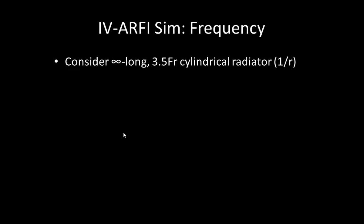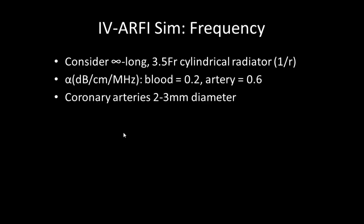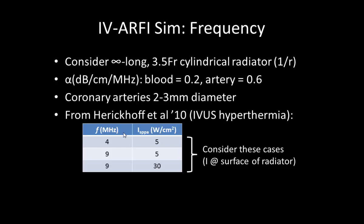Regarding frequency, we first considered a 3.5 French cylindrical radiator of infinite length and noted that a cylindrical wavefront falls off as 1 over r without attenuation. We then considered attenuation in blood and the arterial wall, and the fact that coronary arteries are two to three millimeters in diameter. We considered three cases first investigated related to IVUS hyperthermia, taking those intensity values at those frequencies as our initial cases. From here we could calculate the body force F as a function of radial distance R and frequency, for both two-millimeter and three-millimeter diameter vessels — six cases total.